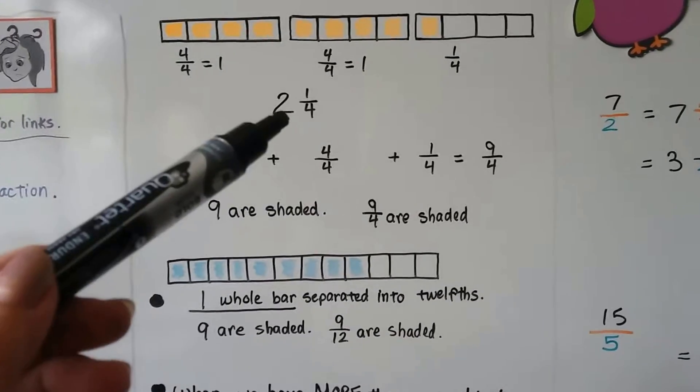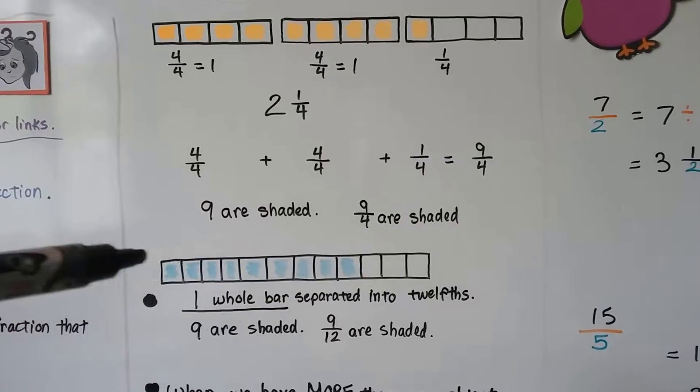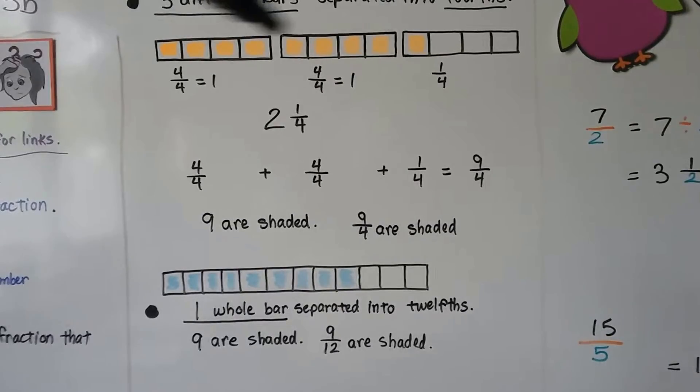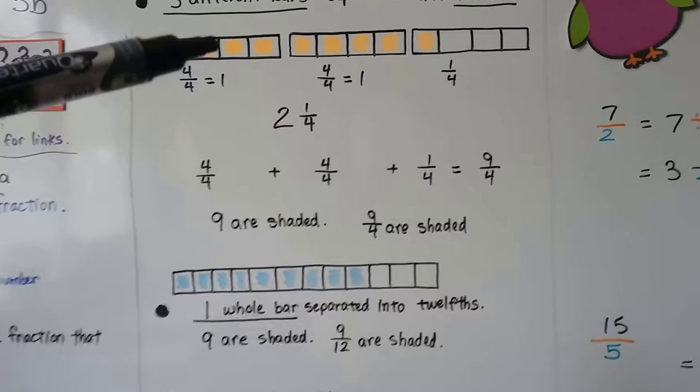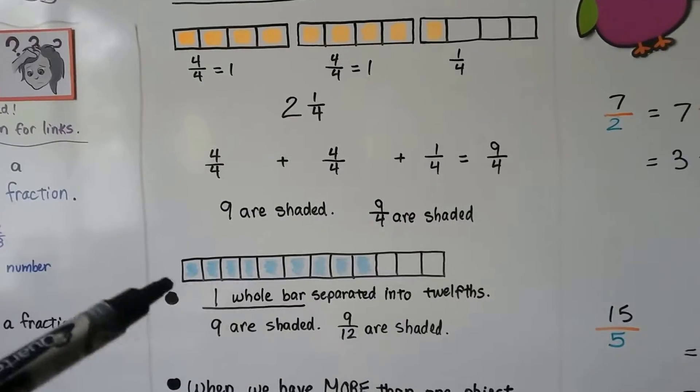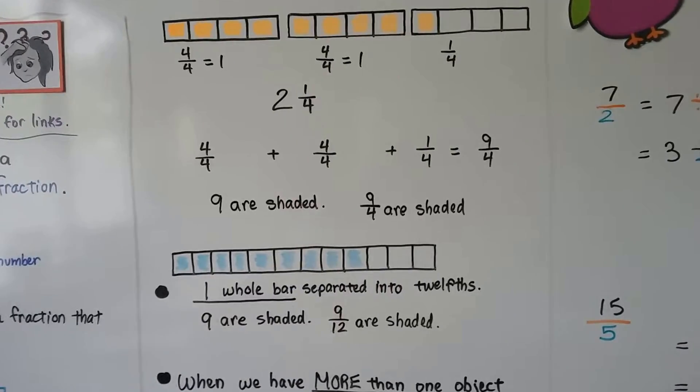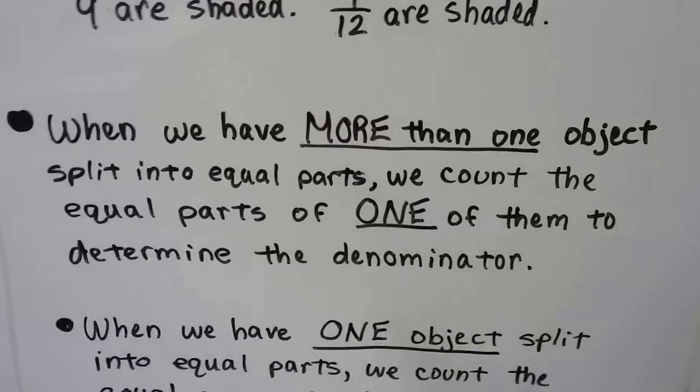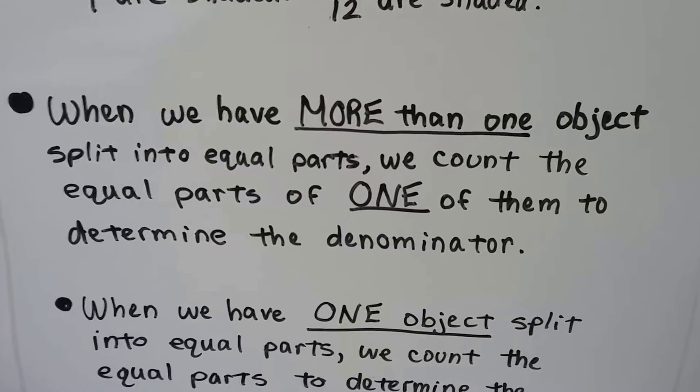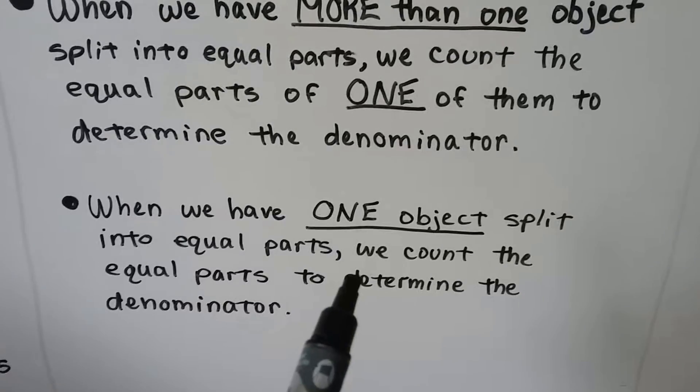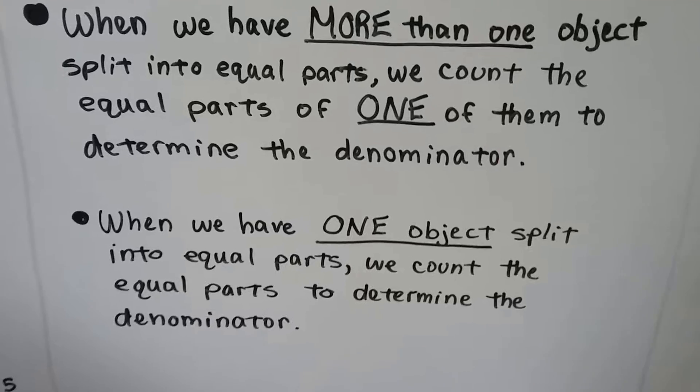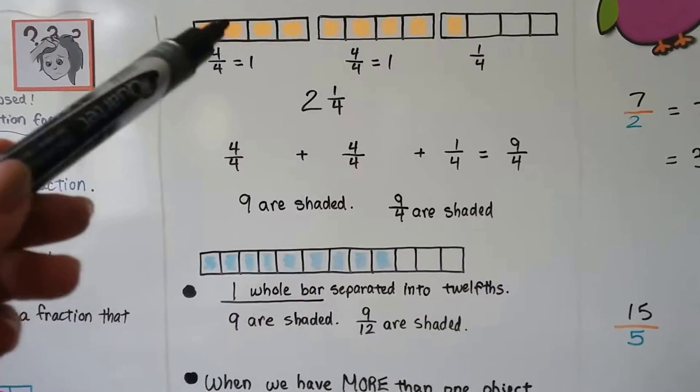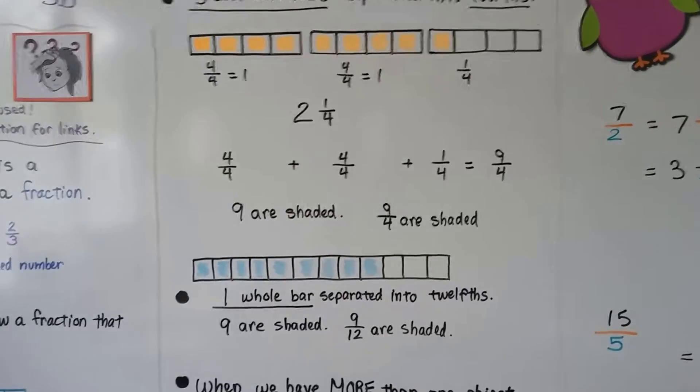The reason this is 9 twelfths, and this is 2 and 1 fourth or 9 fourths, is because this is one whole bar. This was three separate bars. So when the objects are separated like this, you count how many equal groups are in one of them. When it's one whole thing, one whole bar, then you count how many are shaded out of how many equal groups. That's 9 twelfths. When we have more than one object split into equal parts, we count the equal parts of one of them to determine the denominator. When we have one object split into equal parts, we count the equal parts to determine the denominator.